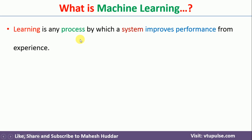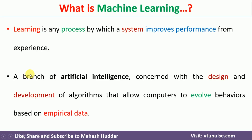Here is one more definition: machine learning is a branch of artificial intelligence concerned with design and development of algorithms that allow computers to evolve behaviors based on empirical data. It is a similar definition put in different words. It is a branch of artificial intelligence concerned with designing and developing algorithms — or different models — that allow a system or computer to improve its performance based on past data or experience.